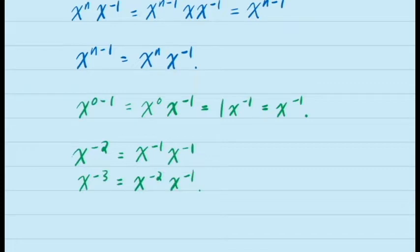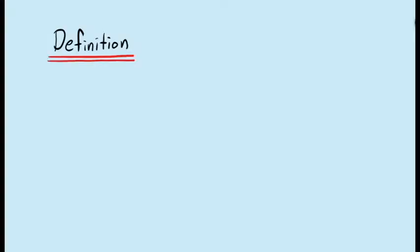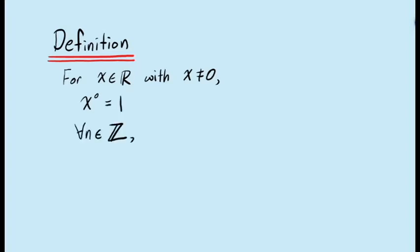This definition is compatible not only with natural number exponents but with all integer exponents. We can define integer exponents as follows: we define x to the exponent 0 to be 1, and for all n in the set of integers, x to the exponent n minus 1 is defined to be x to the exponent n times x inverse.